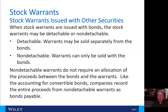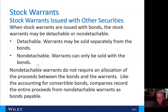Hi everybody, and welcome back to video number two in chapter 15. When we left off, we were looking at stock warrants issued with other securities. When the stock warrants are issued with bonds, the stock warrants may be detachable or non-detachable. Detachable means the warrants may be sold separately from the bonds; non-detachable means they can only be sold with the bonds. Non-detachable warrants do not require an allocation of the proceeds between the bonds and the warrants. Like the accounting for convertible bonds, companies record the entire proceeds from non-detachable warrants as bonds payable.